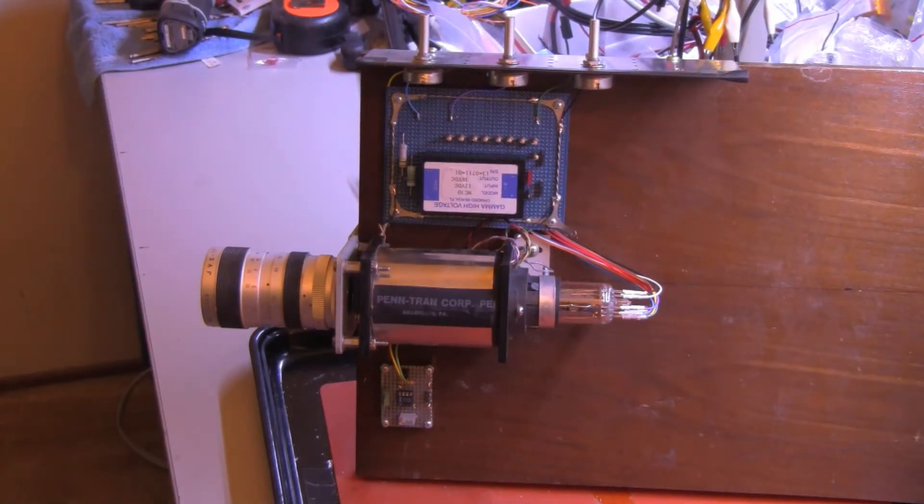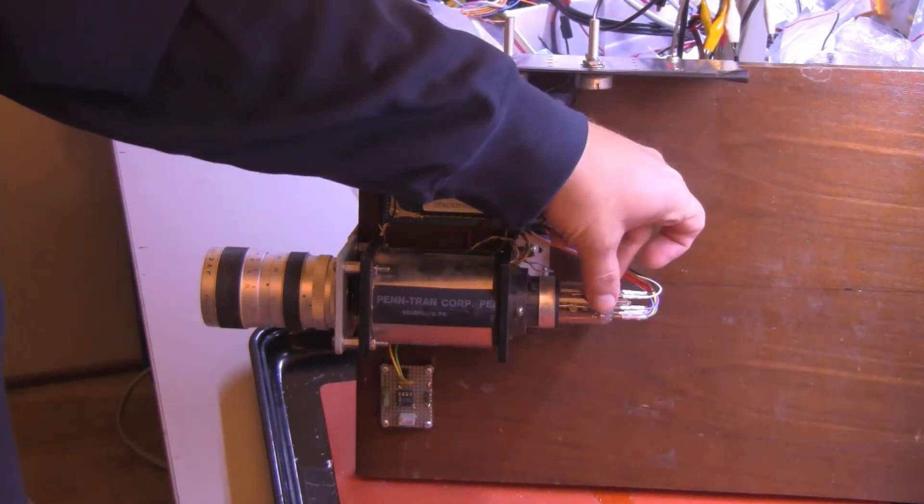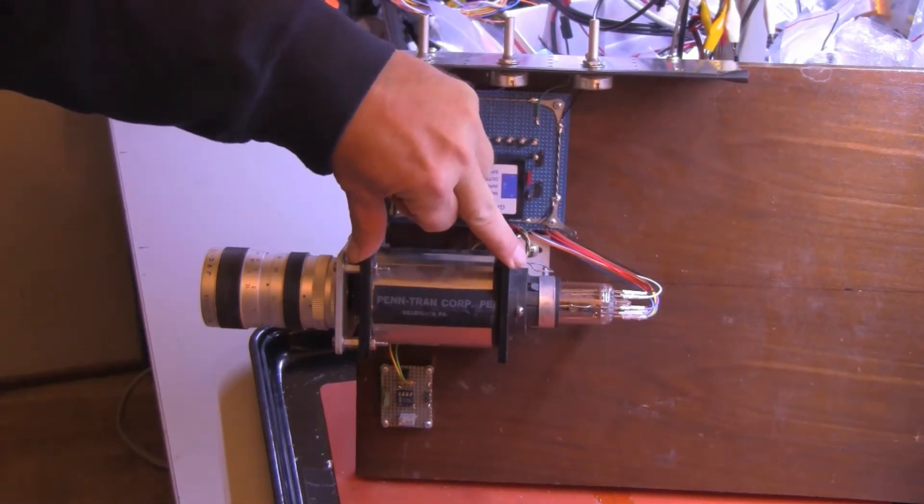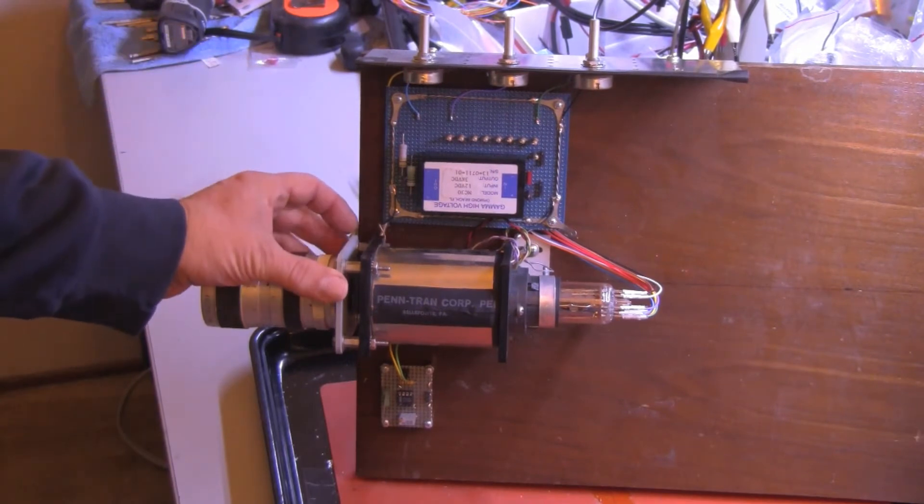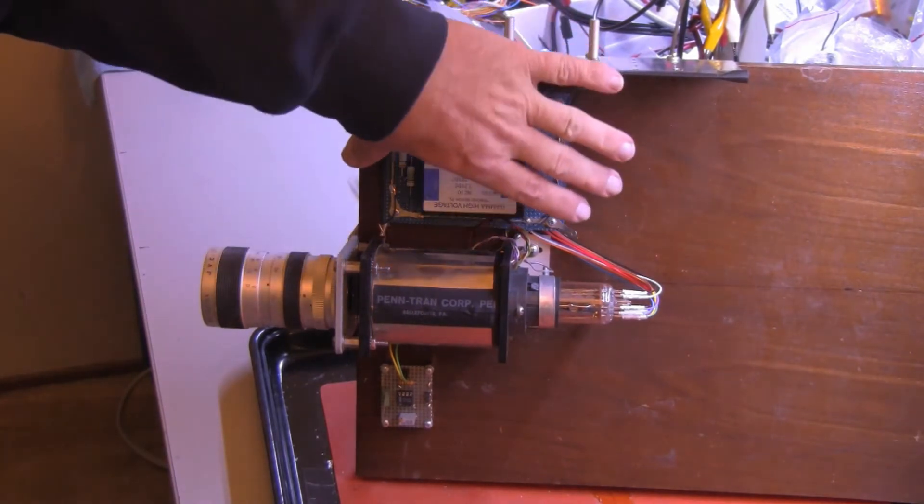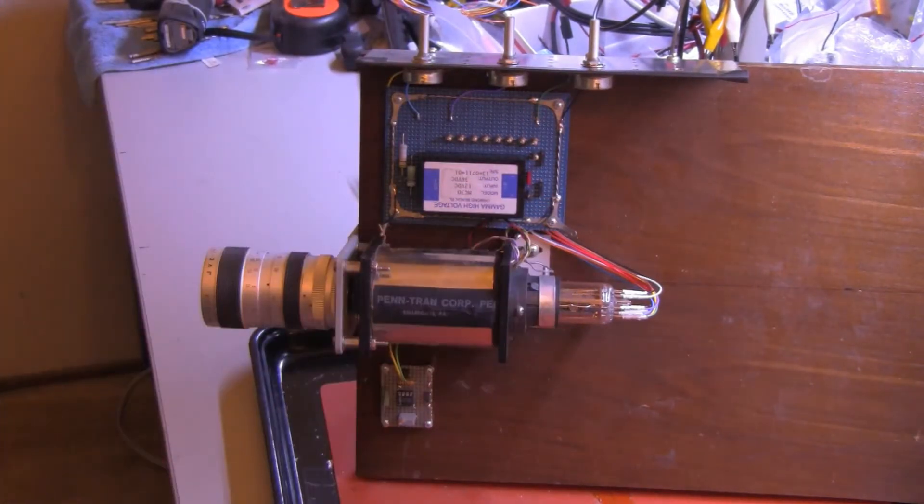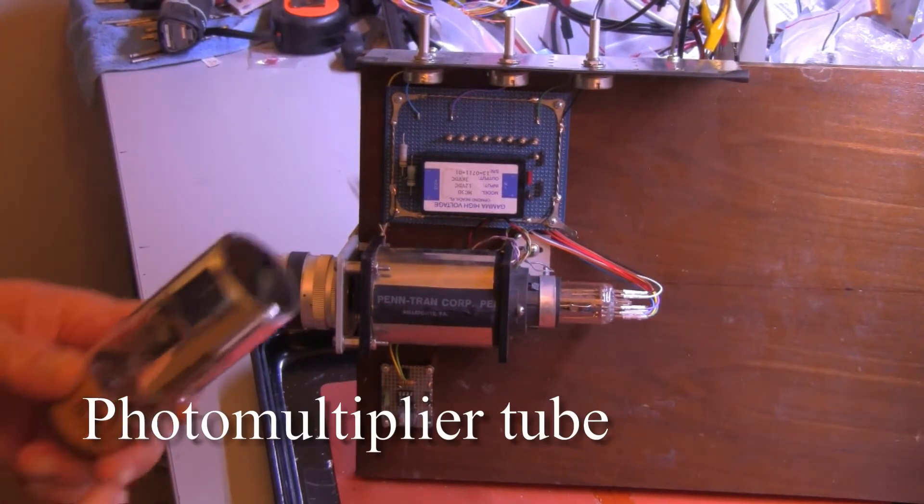And it is designed to fit in the format of a 1-inch Vidicon tube. So what we're looking at here is the image dissector tube, the magnetic focus and deflection coils, a standard zoom lens, a lens mount, the high voltage power supply for the image dissector tube, and the adjusting controls that are part of it.